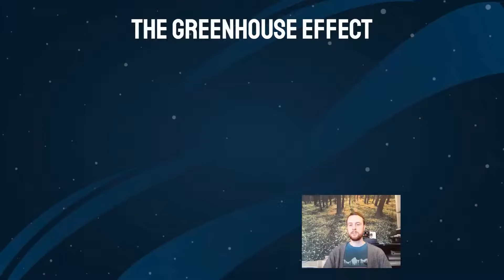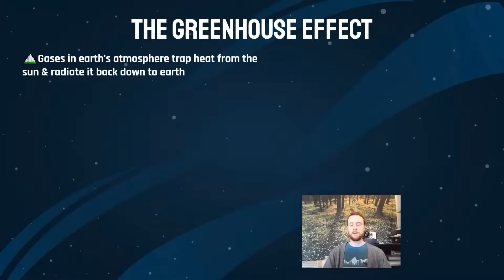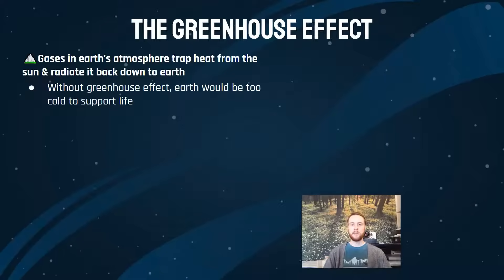The greenhouse effect is the idea that there are gases in Earth's atmosphere that trap heat and radiate it back down to Earth. The greenhouse effect gets a bad rap sometimes, but it's important to point out that without it there would be no life on Earth — the planet would be too cold to support liquid water on much of its surface. It's really critical, but it's a delicate balance.